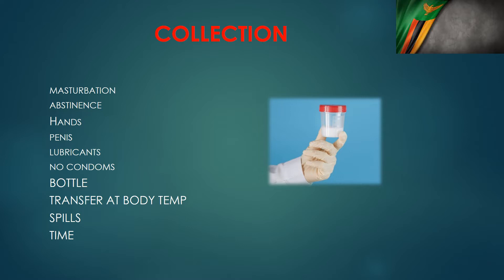The sample should be collected after 3 to 7 days of abstinence. Before collection, hands and penis should be washed. During collection, no lubricants should be used at all — and lubricants include saliva. A condom should not be used because of the gel applied to it, and some condoms contain spermicide or jellies. So it is advised that condoms are not used for semen collection.